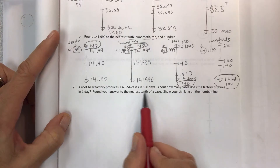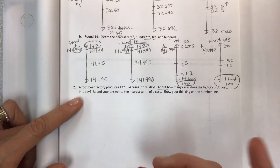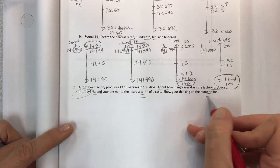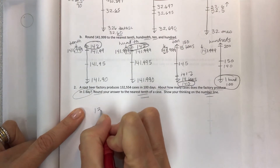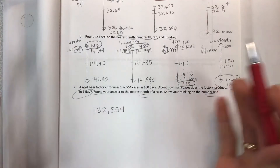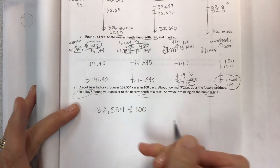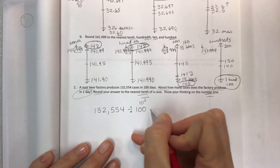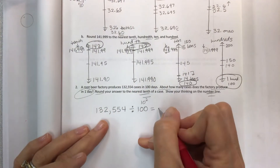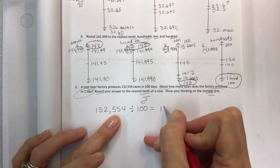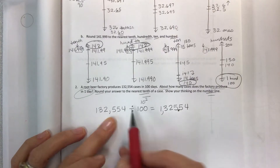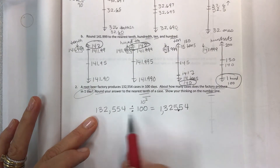Let's do another one: a root beer factory produces 132,554 cases in 100 days. About how many cases does the factory produce in one day? Round your answer to the nearest tenth and show your thinking on a number line. We have 132,554 over 100 days. If I want one one-hundredth of that, I divide by 100 — that's a shift of two place value positions to smaller values. So I place my decimal two places to the left: 1, 3, 2, 5, 5, 4 — shift and plop it right there — which gives me a number that's 100 times smaller, or one one-hundredth of the original.